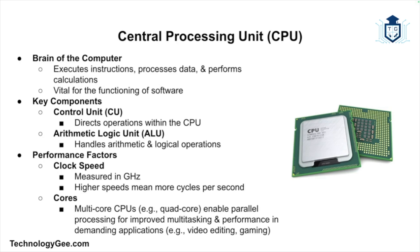Next let's talk about the CPU, or Central Processing Unit. The CPU is often referred to as the brain of the computer — it performs calculations, executes instructions, and processes data, allowing software to function. The CPU processes instructions from software programs and performs calculations from simple math to complex computations. The CPU has two main components: the control unit, which directs operations, and the Arithmetic Logic Unit (ALU).